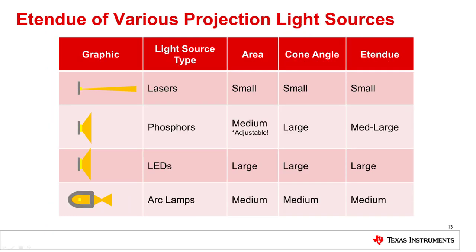As long as it is desirable to capture all of the light, the light source's etendu should not be larger than the DMD's. Some of the most common light sources for projection systems are shown. Lasers generally have the smallest etendu, with small emission areas and angles. Phosphors emit light in a wide Lambertian profile, but because the excitation spot size and shape is controllable, there is some adjustability to the resulting etendu.